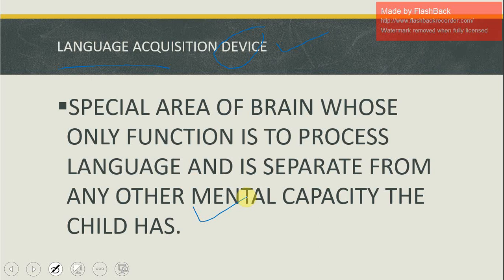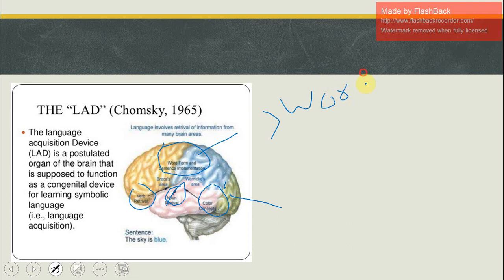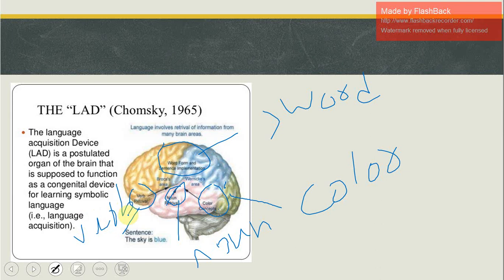The Language Acquisition Device is a postulated organ of the brain supposed to function as a congenital device for learning symbolic language. This diagram shows word form and sentence implementation — where nouns are retrieved, where verbs are retrieved, where color concepts are stored. The human brain is designed according to the fact that it will support language learning.